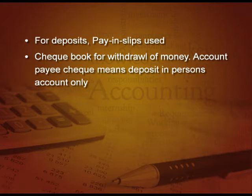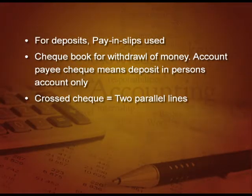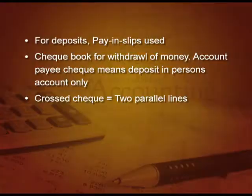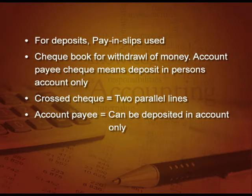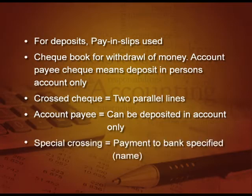Account payee cheque means you can deposit it in that particular person's account only. Now, what is a crossed cheque? When we put two parallel lines on the face of the cheque, it is called a crossed cheque. This crossing can be of two types: first, account payee — which can be deposited in the account only. But there can be special crossing also — within those parallel lines, if you have written the name of the bank, then it can be deposited only in that particular bank, and that is called special crossing. So if I put a special crossing like SBI, you can deposit this cheque only in an SBI account and nowhere else.